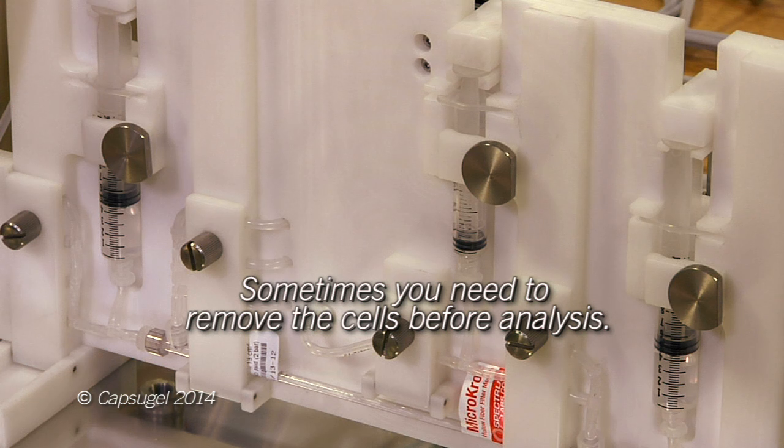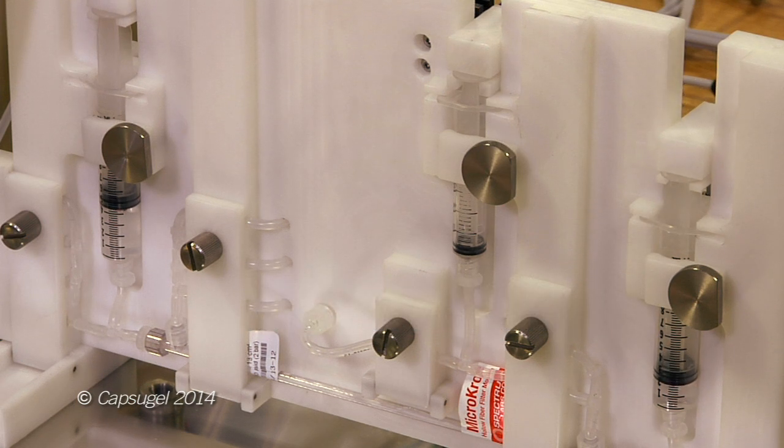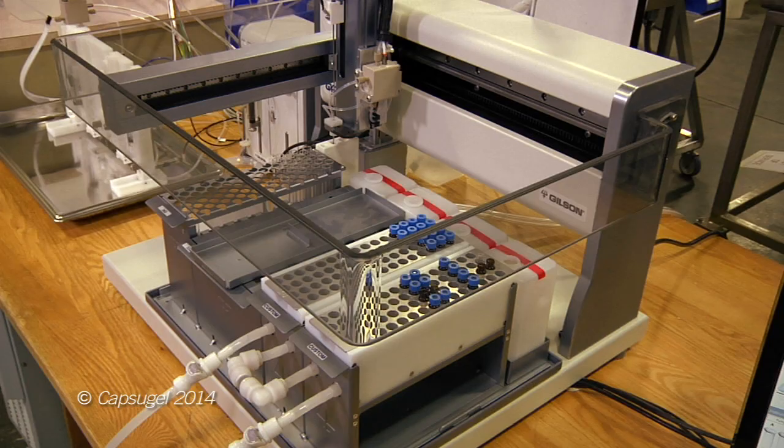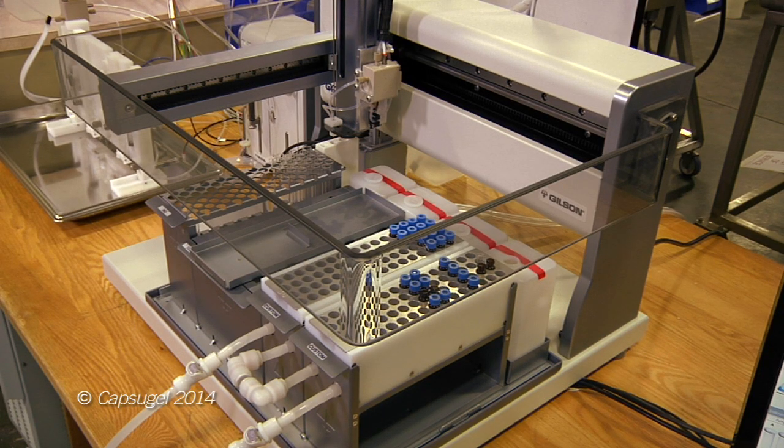A new MAST module in beta testing is the automated cell removal system. This system automatically removes the cells in a whole broth sample, providing a clear cell-free aliquot for analysis. The MAST system can then transfer this cell-free aliquot to other downstream devices such as liquid chromatographs or mass spectrometers.